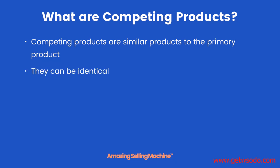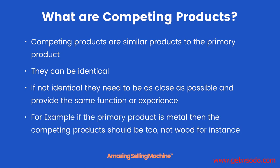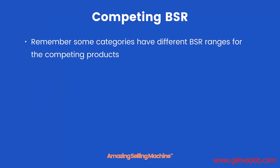Competing products are similar products to the primary product. They can be identical, and in quite a few cases this is what you are going to see. But if not identical, they need to be as close as possible and provide the same function or experience. For example, if the primary product is metal, then the competing products should be too — not wood or plastic or any other material.